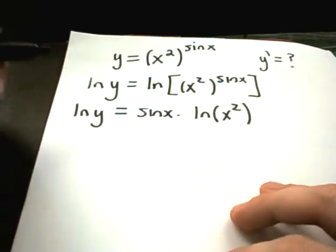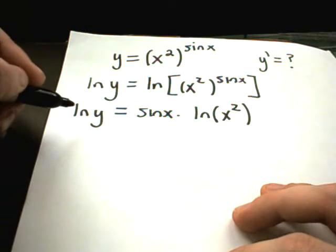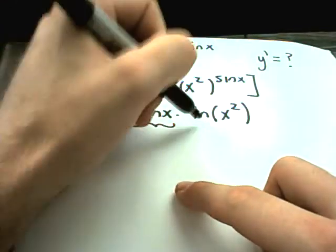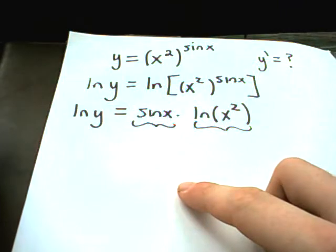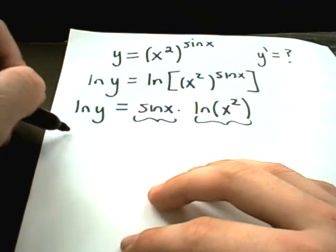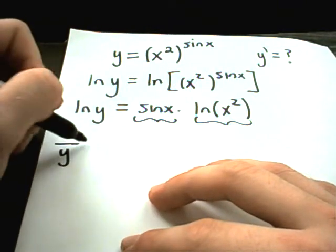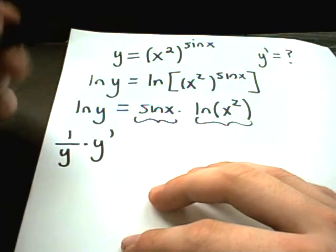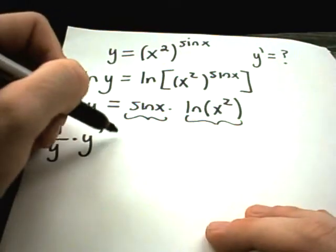And now I'm going to take the derivative with respect to x of both sides, noticing on the right side that I'm going to have to use the product rule. So the derivative of ln of y, that's 1 over y, times y prime, or dy dx, as I did in my other example.